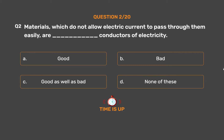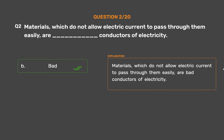The correct answer is Option B: Bad. Materials which do not allow electric current to pass through them easily are bad conductors of electricity.